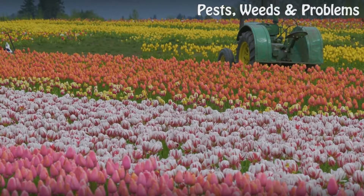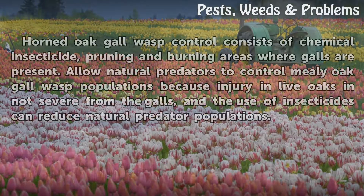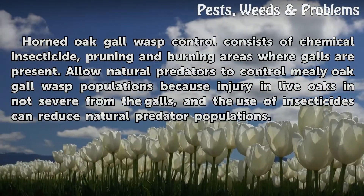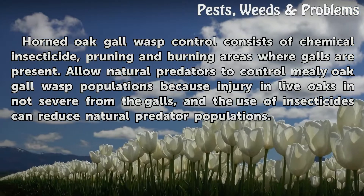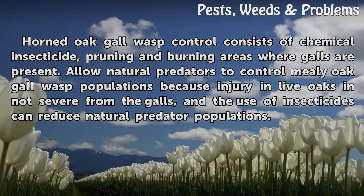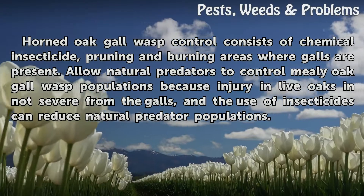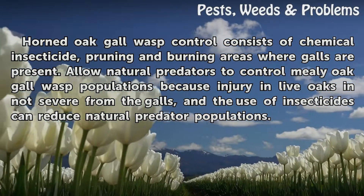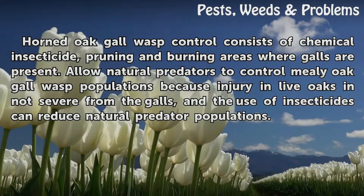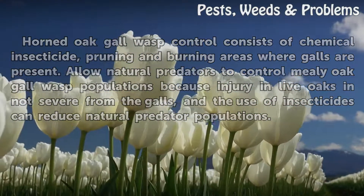Control of the horned oak gall wasp consists of chemical insecticide, pruning, and burning areas where galls are present. For the mealy oak gall wasp, it is best to allow natural predators to control populations, because injury to live oaks from the galls is not severe and the use of insecticides can reduce natural predator populations.